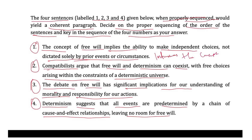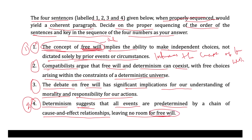Sentence one introduces the concept of free will. So that is what we can find out here. The second in sequence would be option four, which points out that determinism suggests all events are predetermined by a chain of cause and effect relationship, leaving no room for free will. So this follows by explaining the opposing concept — the opposing concept of determinism.